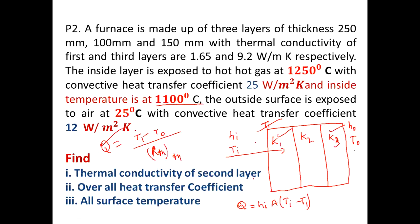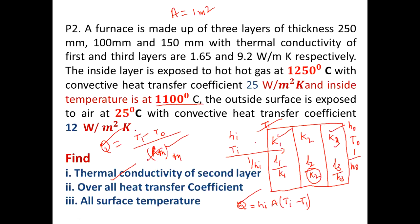In R thermal resistance, you know Q from this equation. R thermal resistance includes 1 by HI, plus L1 by K1, plus L2 by K2, plus L3 by K3, plus 1 by H0. Since A is not given, you consider A equal to 1 meter square. Therefore, you have all the thermal resistances, and the only unknown is K2. Then you can find the thermal conductivity K2 by equating this heat transfer. TI is 1250 degrees Celsius and T0 is 25 degrees Celsius, so you can find K2 easily.